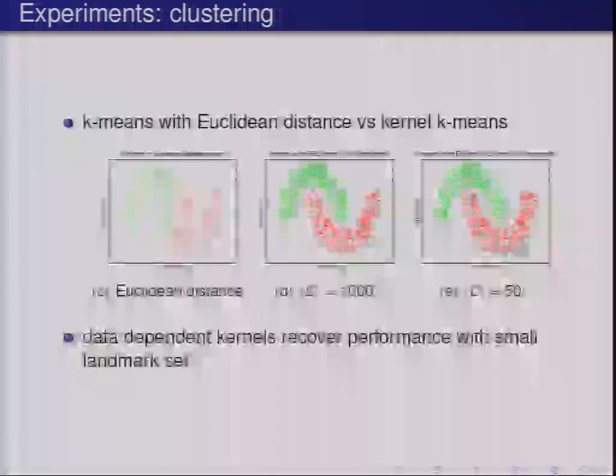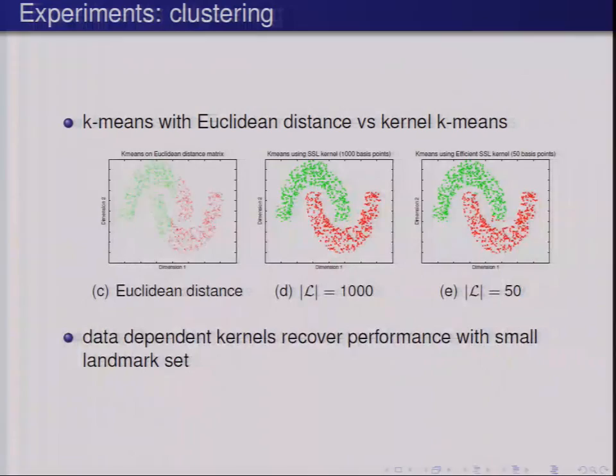On clustering, we looked at the two-moons dataset. K-means with Euclidean distance has no notion of intrinsic structure and fails to separate the two moons. The full construction of Sindhwani et al. using all the data correctly separates them, and using a much smaller landmark set more or less recovers the performance of the full kernel version.